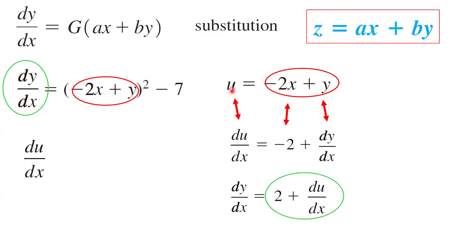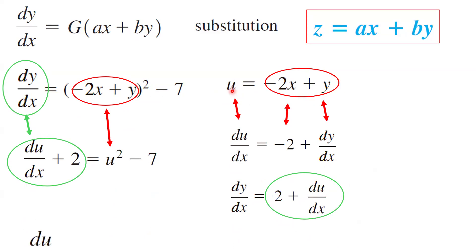So du/dx plus 2 is equal to u squared minus 7. In order to solve this differential equation, we can simplify further by bringing 2 to the other side, so we get du/dx equal to u squared minus 9.